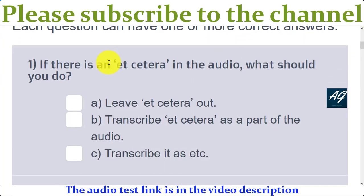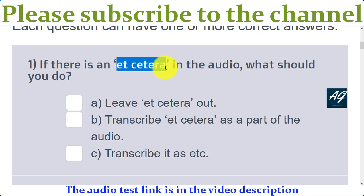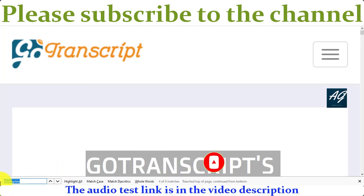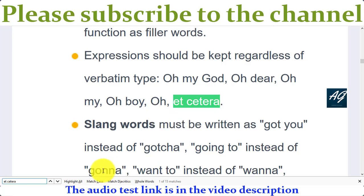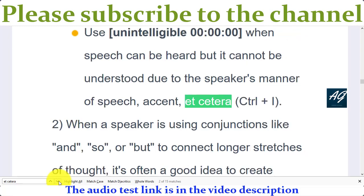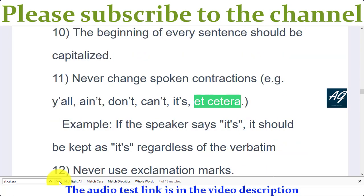First question is: if there is an 'etc.' in the audio, what should you do? You simply copy this 'etc.' and paste here using the command Ctrl+F. In the transcription guidelines it says: never change spoken contractions, for example 'do not,' 'cannot,' 'its,' and 'etc.' So we never change 'etc.'